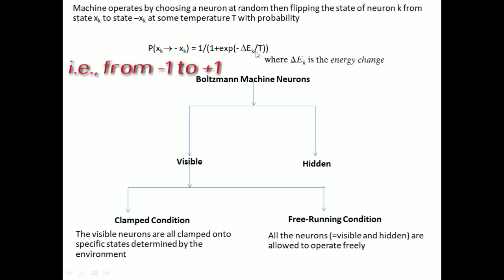Remember that T here is not a physical temperature but a pseudo-temperature, as discussed earlier while covering the stochastic model of a neuron. By applying this rule repeatedly, the machine will reach thermal equilibrium.